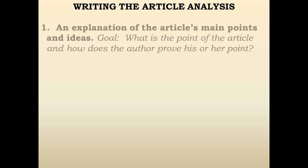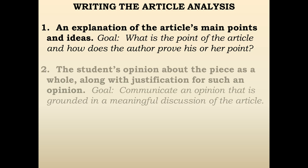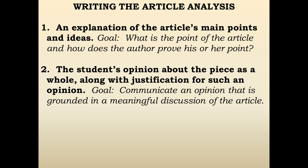Next, we move into writing the article analysis. There are six things that need to be covered to meet the expectations of this assignment. The first is an explanation of the article's main points — what's the point of the article and how does the author prove it? The second is the student's opinion about the piece as a whole, along with justification for that opinion, where you say what you think of the argument.